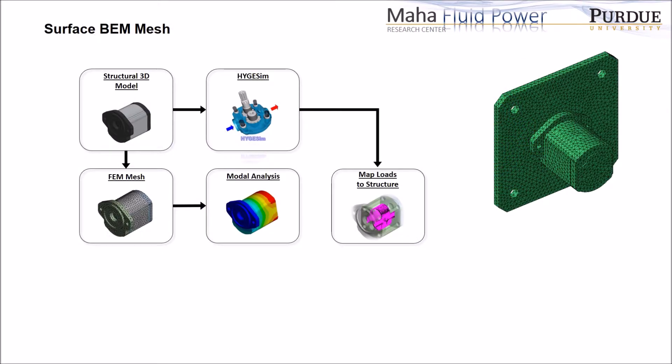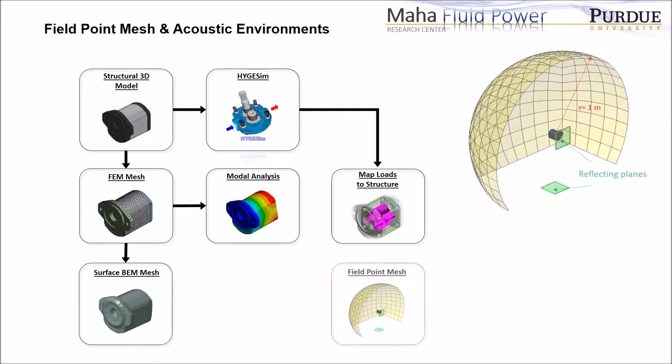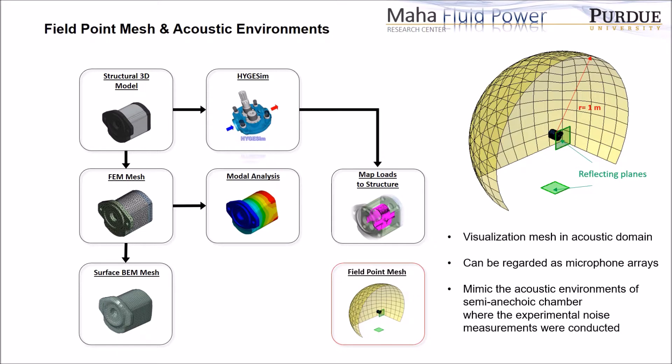For the airborne noise prediction, BEM mesh is generated on the exterior surface of FEM mesh, and field point mesh and the acoustic environment are inserted in the model. The shape of this visualization mesh and the locations of two reflecting planes are determined in such a way as to mimic the acoustic environment of the semi-anechoic chamber where the noise measurements were taken for the model validation. You will see the picture of the sound chamber and how the noise measurements were taken in a couple of slides.